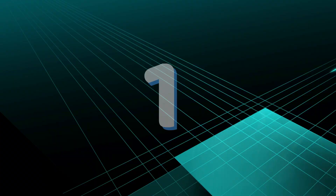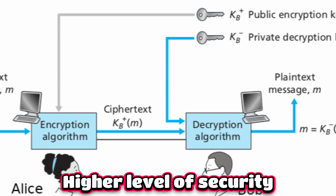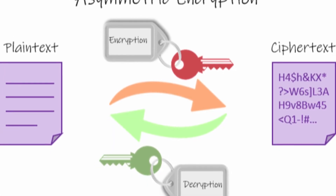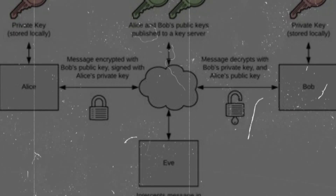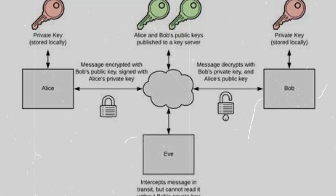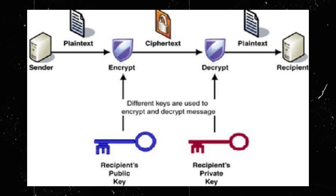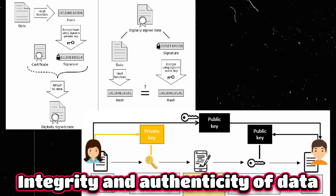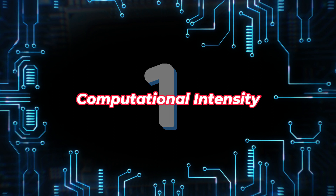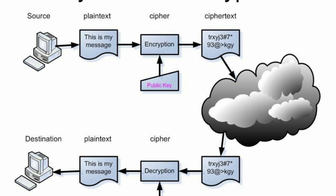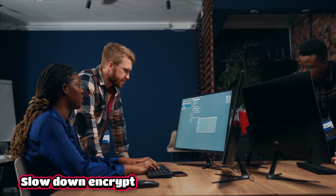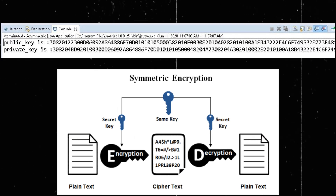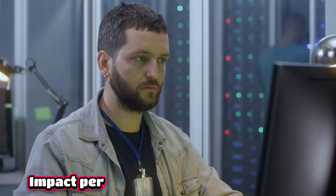Asymmetric encryption advantages: First, enhanced security — asymmetric encryption provides a higher level of security because it uses two mathematically linked keys, the public key and private key; the private key is kept secret and only used for decryption, ensuring confidentiality. Second, key distribution — asymmetric encryption eliminates the need for securely distributing a shared key; users can freely share their public keys while keeping their private keys secret. Third, authentication and digital signatures — asymmetric encryption enables authentication and digital signatures, ensuring the integrity and authenticity of data. Disadvantages: First, computational intensity — asymmetric encryption is computationally intensive, requiring more processing power and time compared to symmetric encryption, which can slow down operations. Second, key length — asymmetric encryption typically requires longer key lengths compared to symmetric encryption to maintain an equivalent level of security, and longer key lengths can impact performance and memory usage.